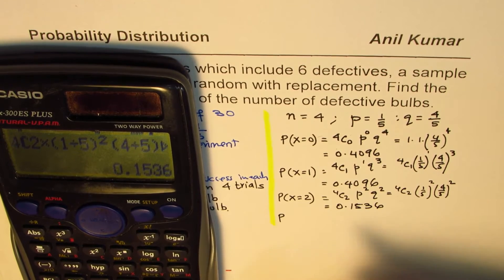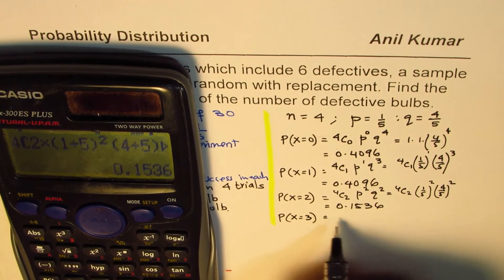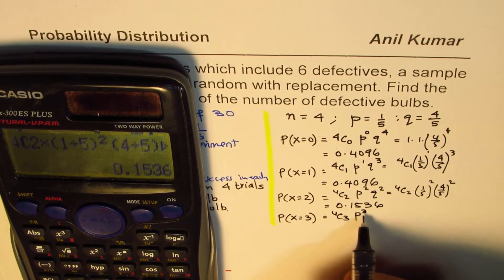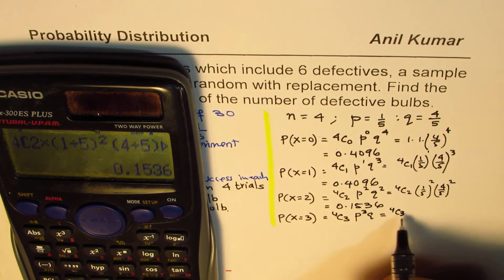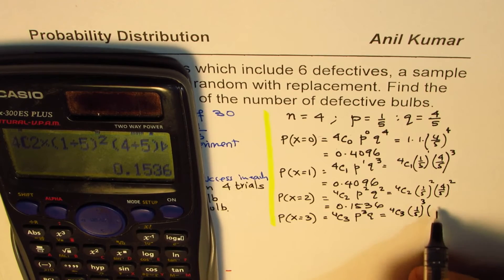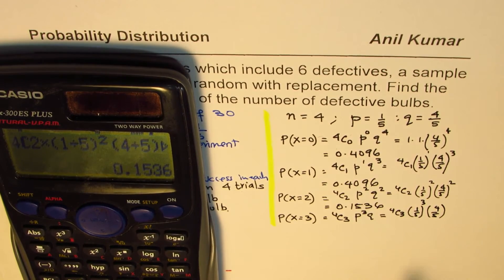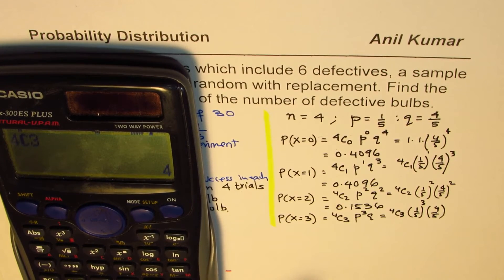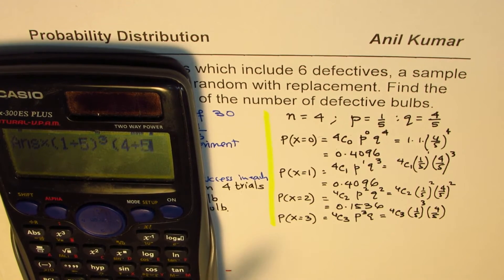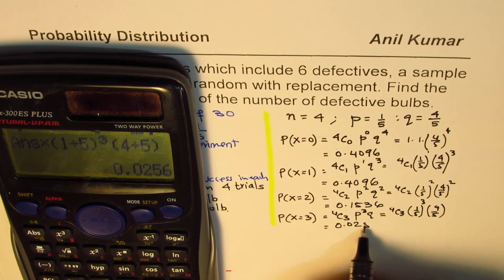We will find the probability for X equals 3, which is 4C3 × P^3 × Q^1, that is 4C3 × (1/5)^3 × (4/5)^1, and that gives us, in decimals, 0.0256.